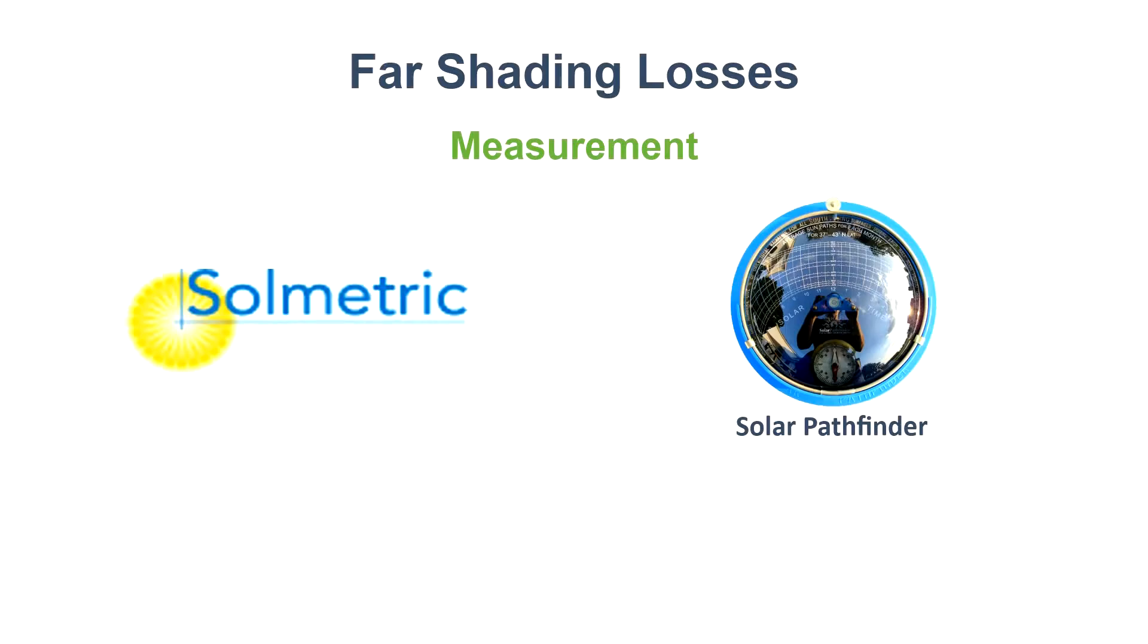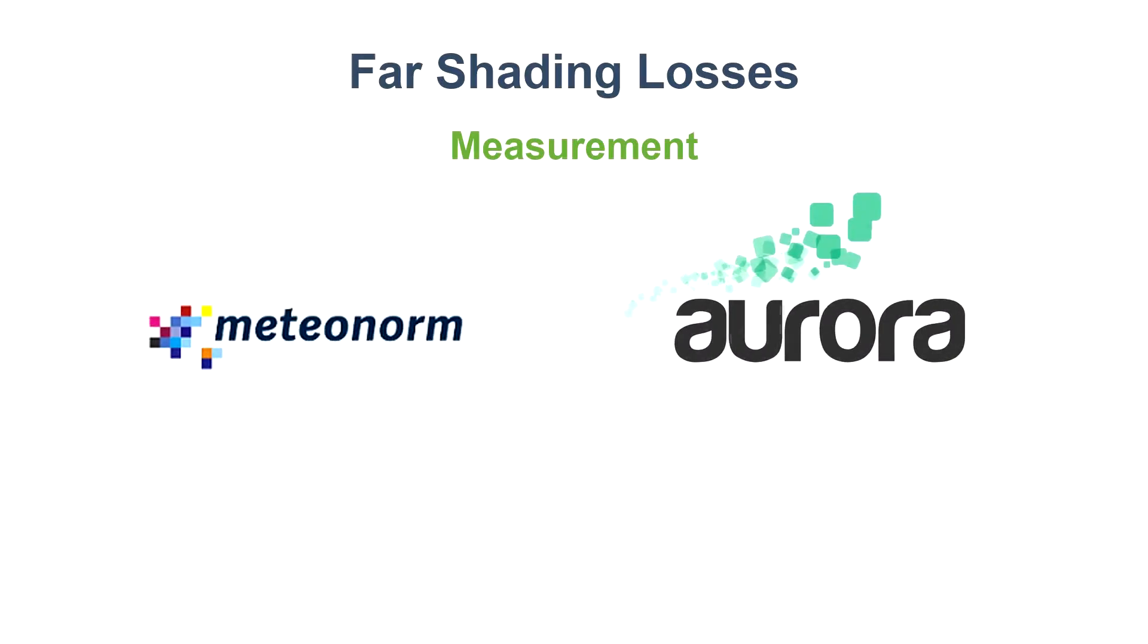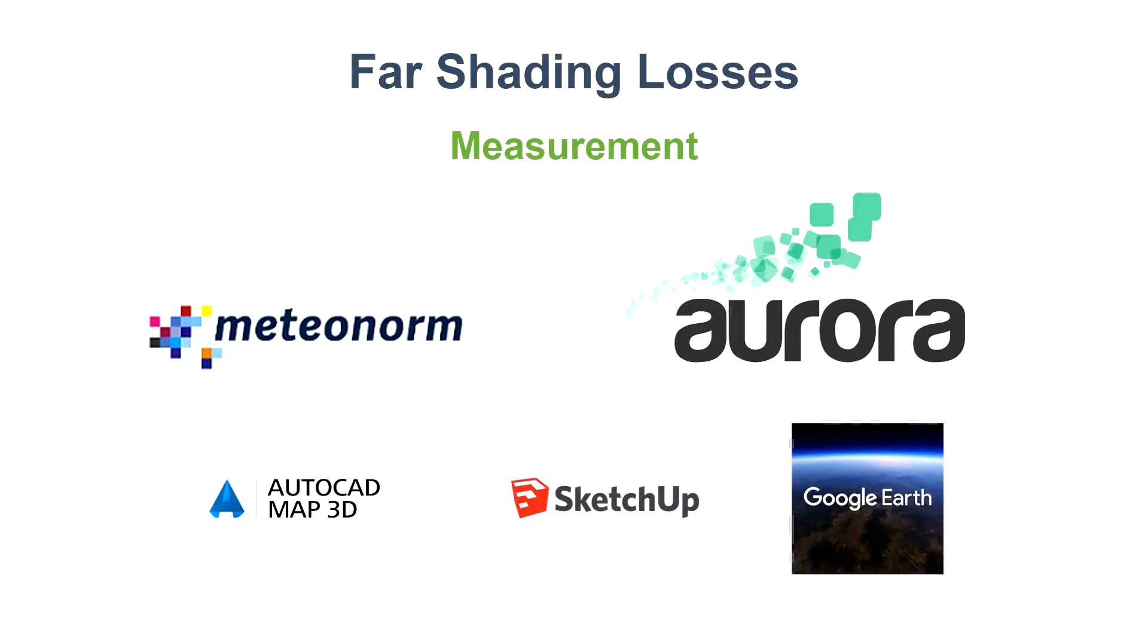So both the SunEye and solar pathfinder are equally efficient and accurate when it comes to far shading analysis. Also, with software like Meteonorm and Aurora Solar, they can create the horizon profile remotely based on the online contour mapping facility.